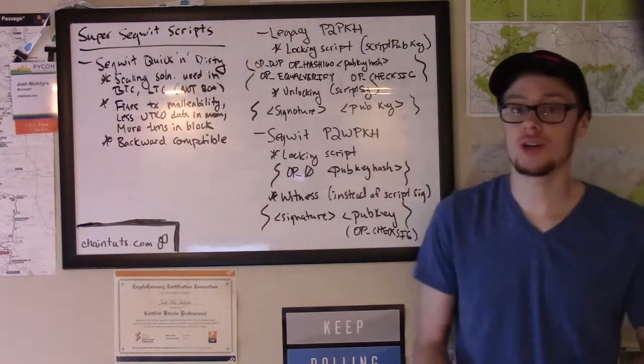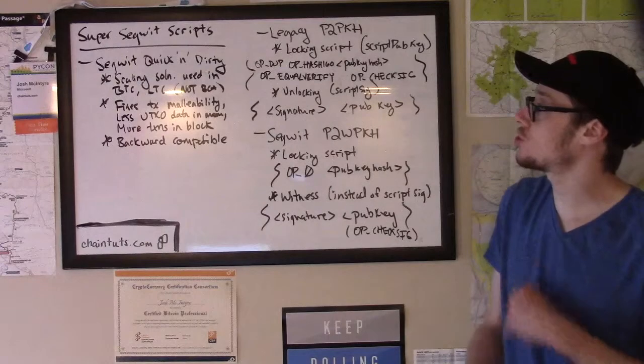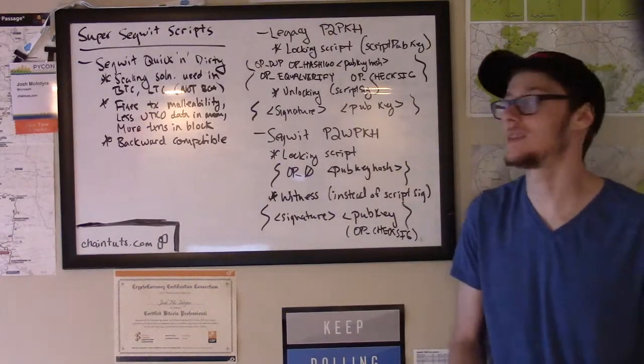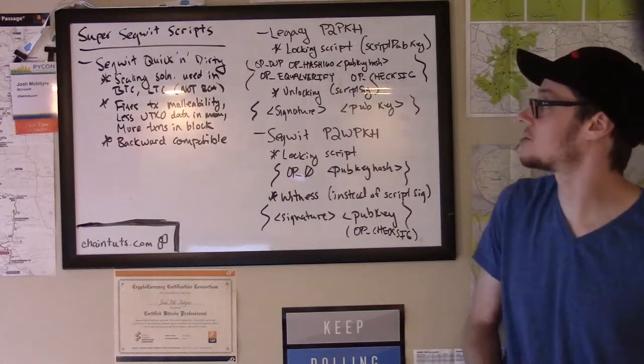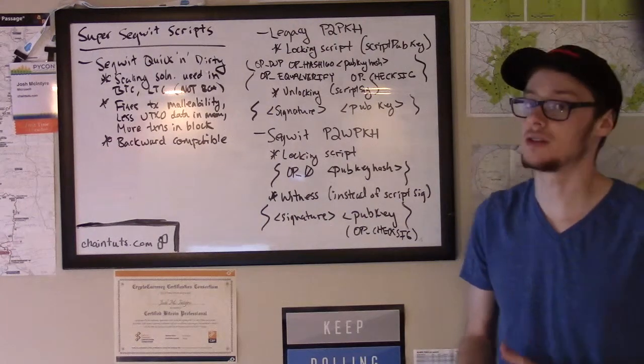Each transaction contains inputs that have locking conditions set on them. These are UTXOs that are owned by the address owner. When the person that previously sent them money sent that transaction, there was a locking condition placed on the funds so that the new owner has to prove they own the funds to use them in a future transaction to send to someone else. A traditional locking script in a paid to public key hash transaction looks something like this. There are several script operators and importantly, there is the public key hash featured in this locking condition.